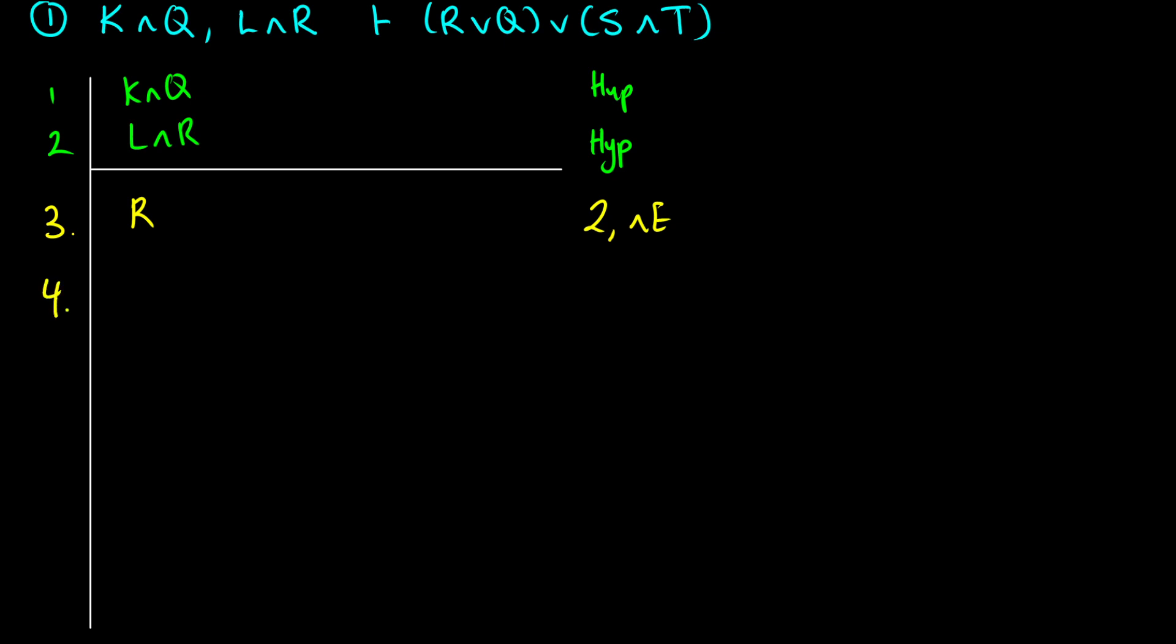Now, because R is true, I know that R or anything I introduce is going to be true. So I know that R or Q is going to be true. So this is line three, and this is called or introduction. So R is true, therefore R or Q is true, because at least one of those is true.